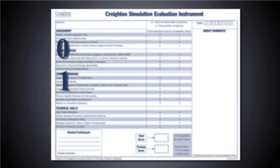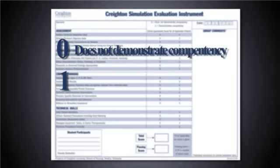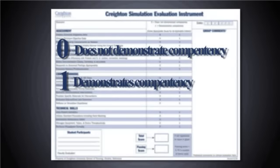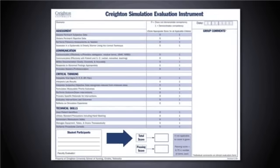Each competency is assigned either a score of zero or a score of one. A zero indicates 'does not demonstrate competency.' A one indicates 'demonstrates competency.' A score of zero or one is assigned by the faculty for each competency that is applicable to the scenario. The total score, located at the bottom of the instrument, is calculated by adding together the total of the competencies following observation of the SCE. The passing score is calculated by taking the total number of applicable competencies used times 0.75. This passing score of 75% was chosen as it is congruent with the standards set forth by our School of Nursing. The determination of a passing score could be modified to match the grading scale at your institution.